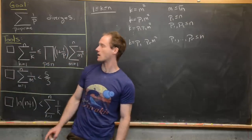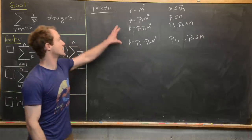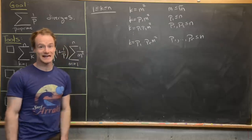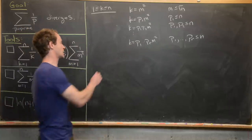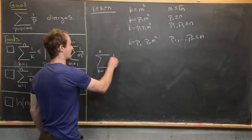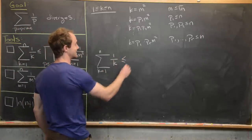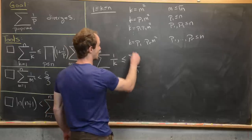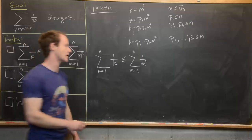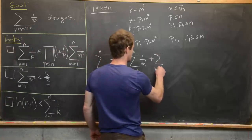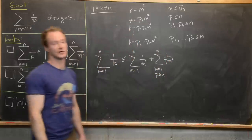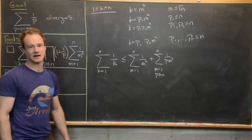We take every term 1/k from the harmonic series and rewrite it depending on whether it's a perfect square, a single prime times a perfect square, the product of two distinct primes times a perfect square, and so on. We change equality to an inequality to avoid worrying about bounds. So the sum k equals 1 to n of 1/k is less than or equal to the sum m from 1 to n of 1/m squared — the perfect square case — plus the sum m from 1 to n of 1/(p·m²), where p is a prime less than or equal to n.